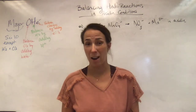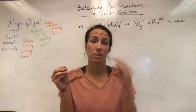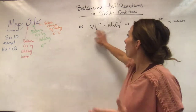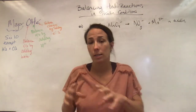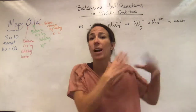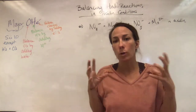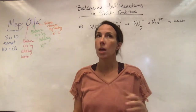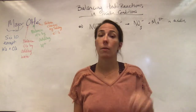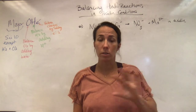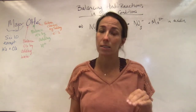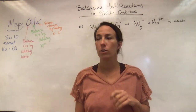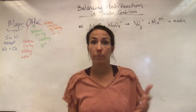Not all half-reactions are simple, like zinc going to Zn2+ and 2 electrons. Some of them are more complicated — they involve polyatomic ions, H+, and multiple reactants and products. These often come in acidic or basic conditions. The Alberta Education exam board only tests acidic conditions, so we're only going to cover acidic conditions this year. You'll do basic conditions in university or AP chemistry.